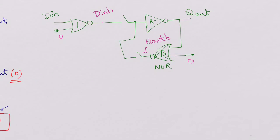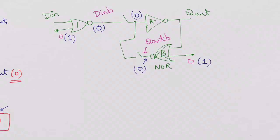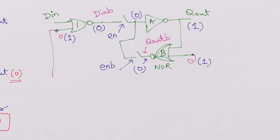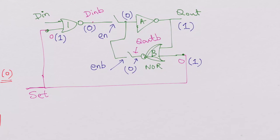But when these second inputs go high, the output of each NOR gate is forced to low. This means the input of inverter A is low irrespective of enable or enable bar — irrespective of which switch is closed. So Q out is forced to a high. This is nothing but a set input. You don't need any inversion here — this is the set input for the latch.